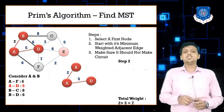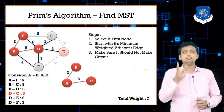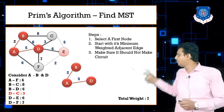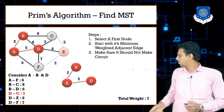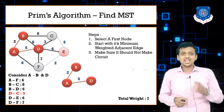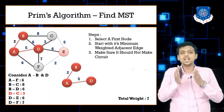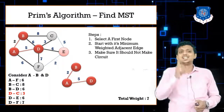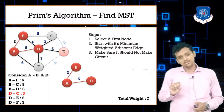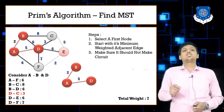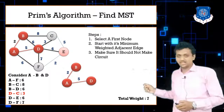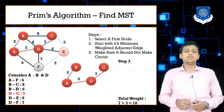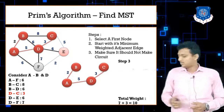Now I have 3 nodes: A, B, and D. I need to find the adjacent edge with minimum weight from all 3 nodes. The adjacent edges listed are AF, BC, BD, DE, and DF. The edge with minimum weight is DC, which is 3. So I draw edge DC with weight 3 and add it to the total. My total weight becomes 7 plus 3, which is 10.